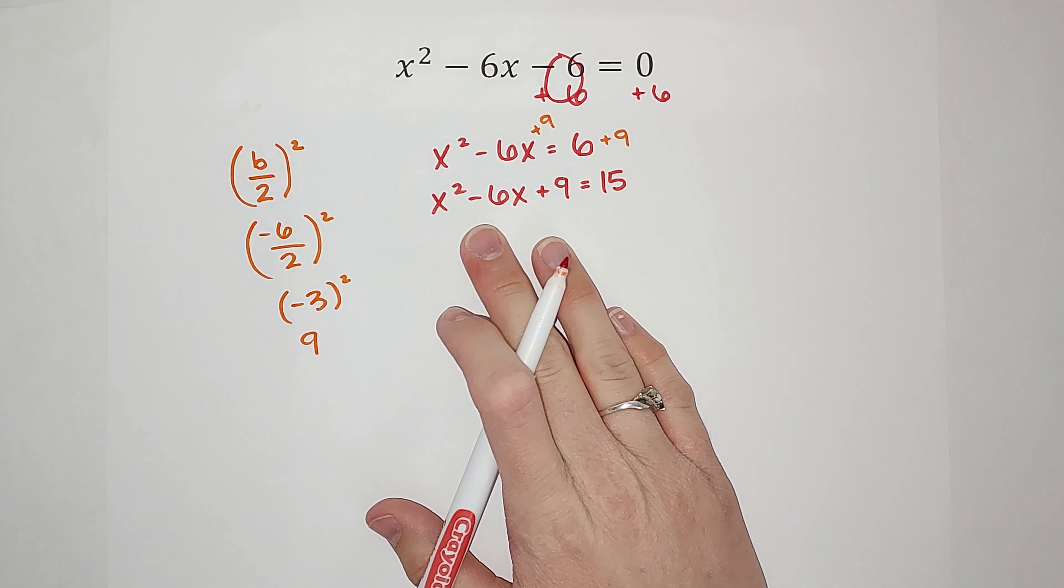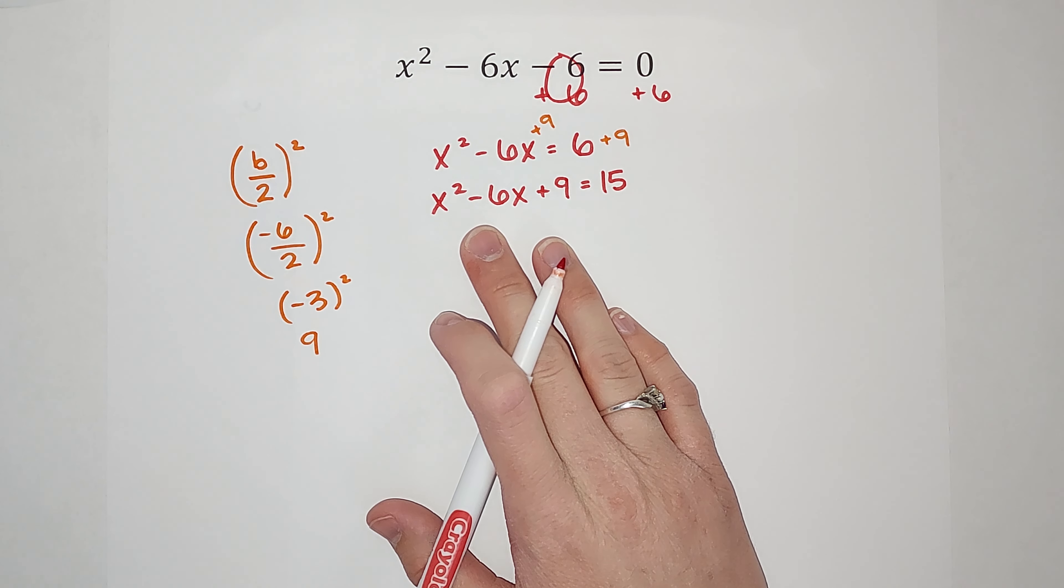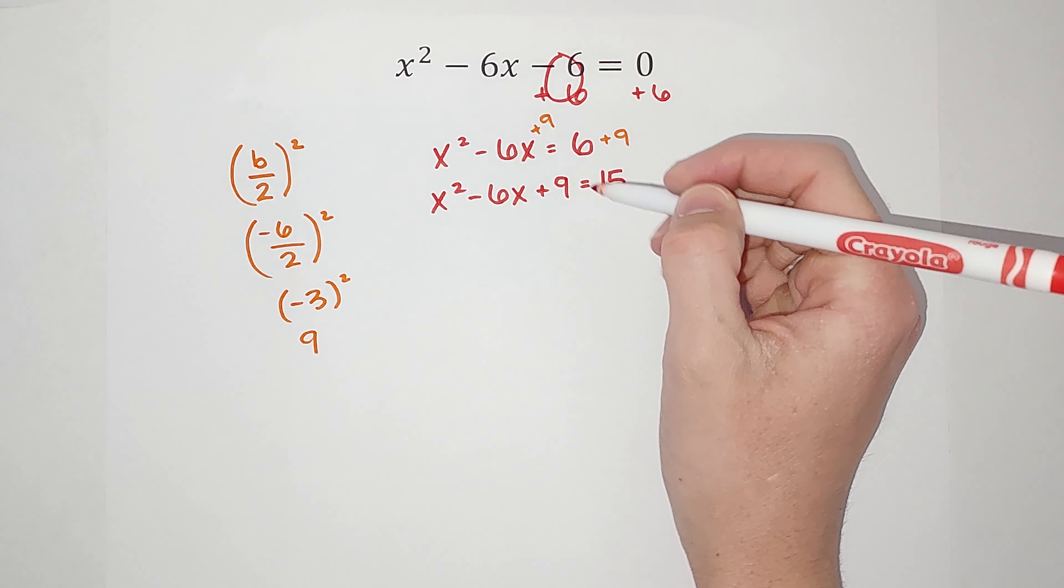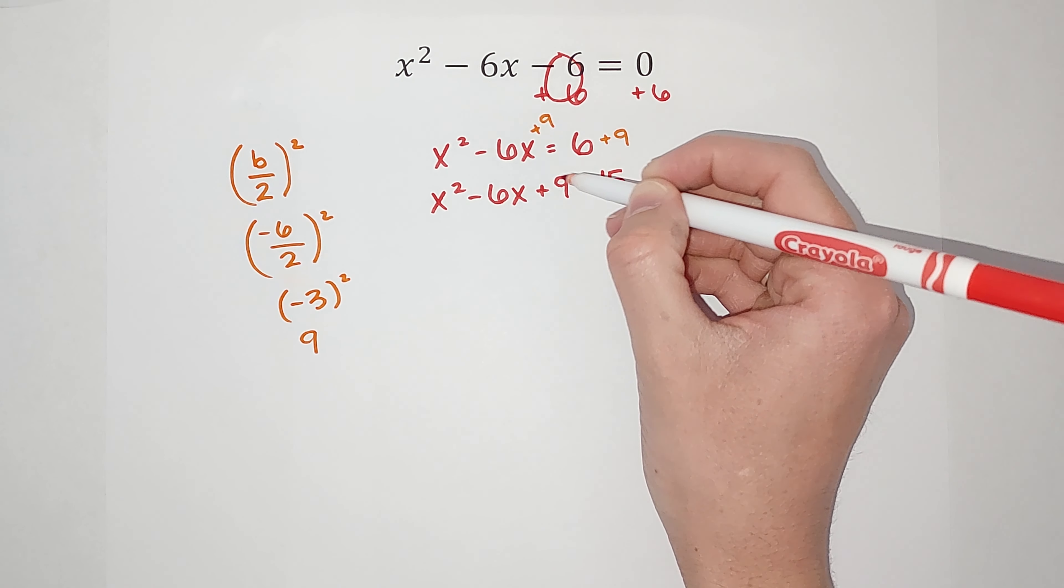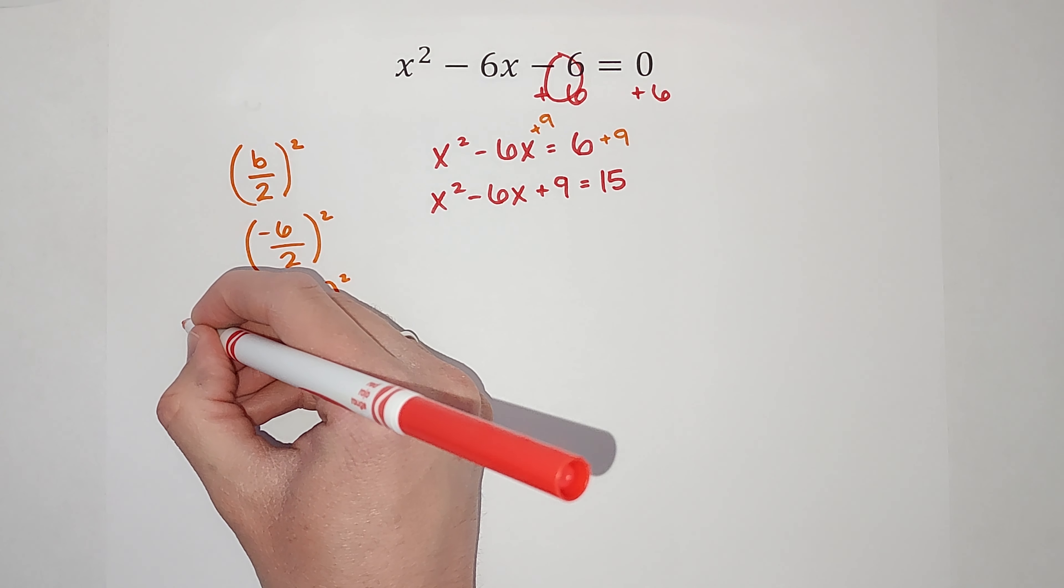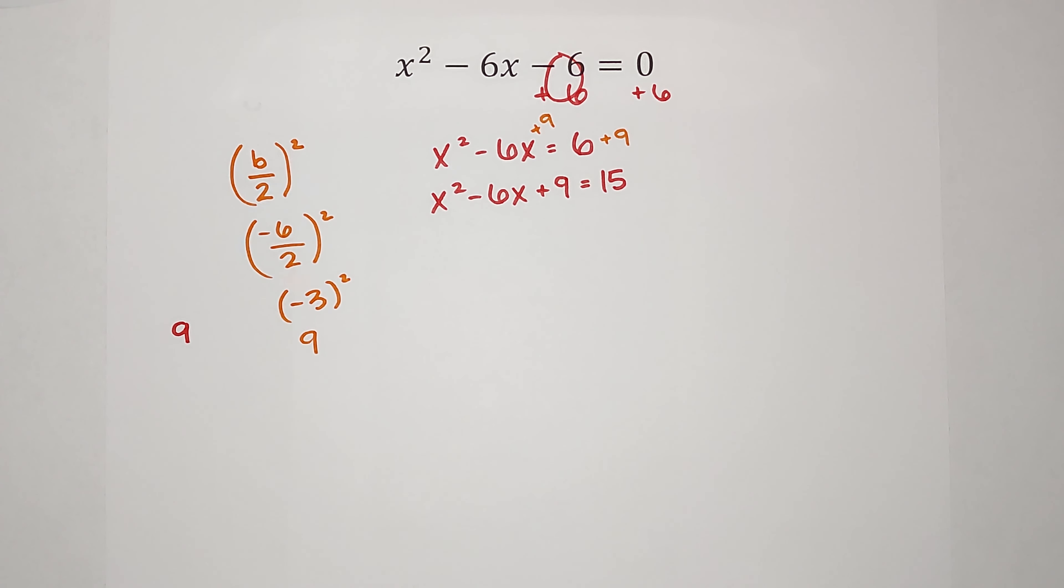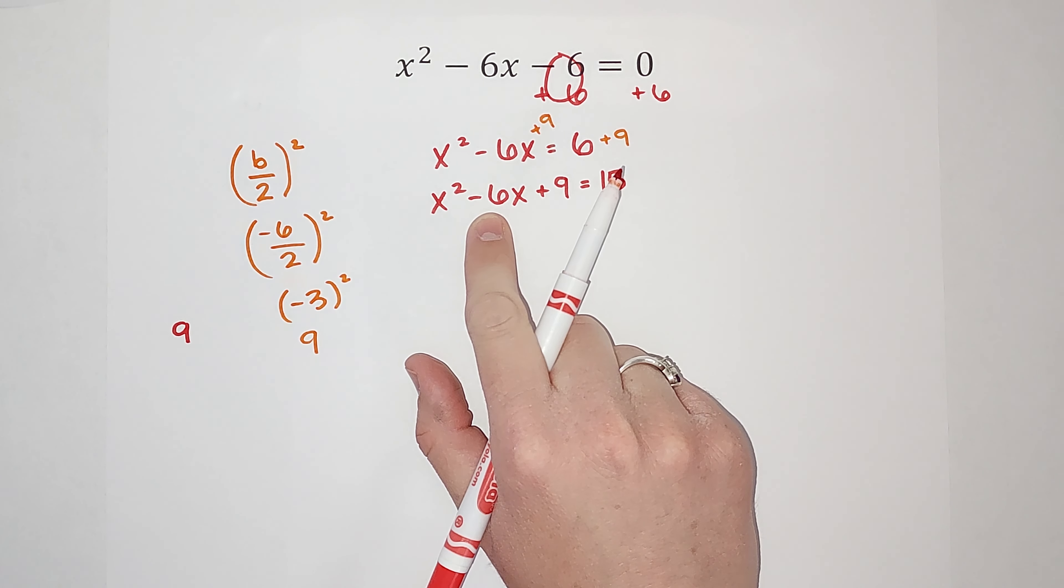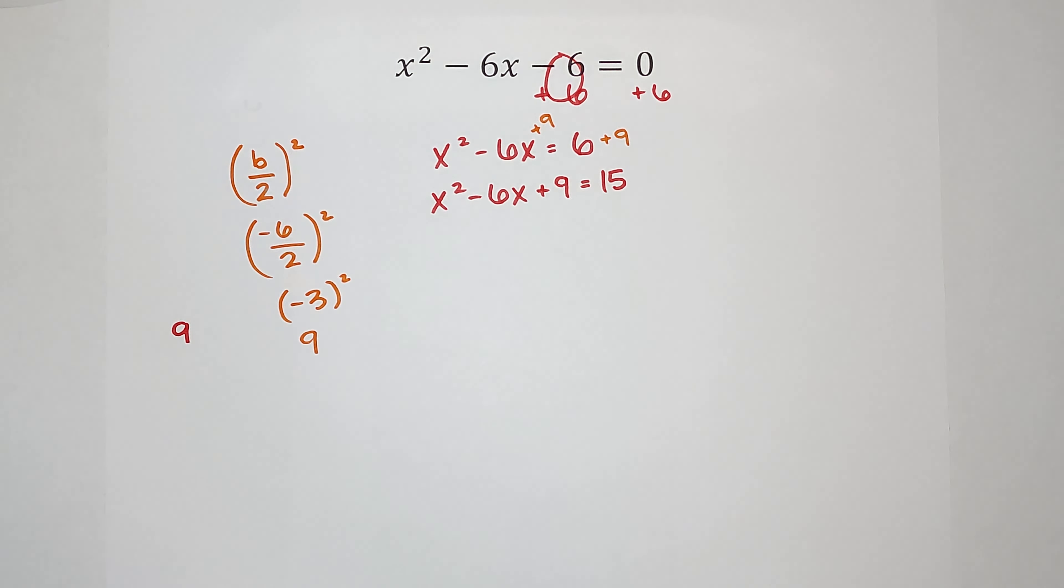Now I am going to factor this side. To factor this, I'm going to take this times the 1 in front of the x squared, which is a 1. So I want to find numbers that multiply to 9 and add to negative 6. If you need a factoring review, I'll put one in the corner. So I'm looking for two numbers that multiply to 9 and add to negative 6.